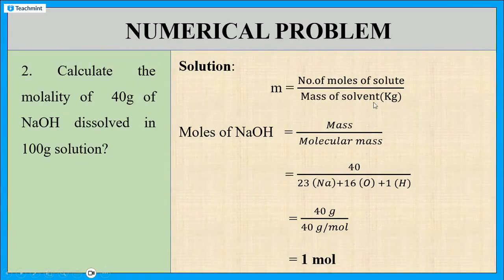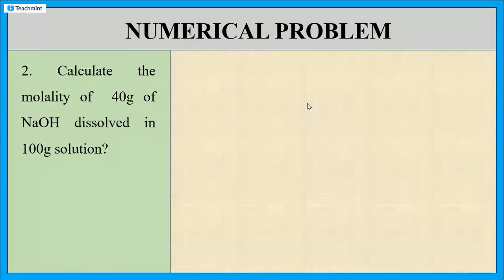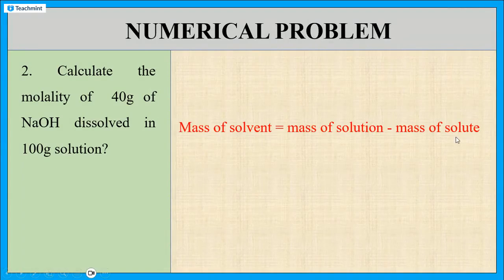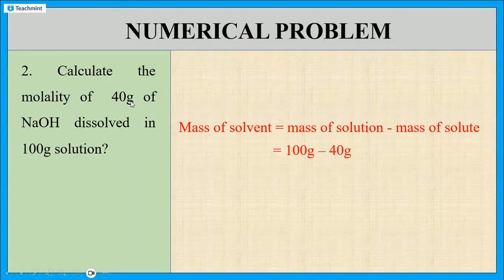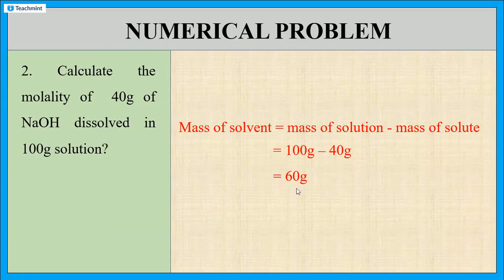Now we need the mass of the solvent, but only the mass of the solution is given. We get the mass of the solvent by subtracting the mass of the solute from the mass of the solution: mass of solvent equals mass of solution minus mass of solute, which is 100 grams minus 40 grams, giving 60 grams. Converting to kg, we divide by 1000, giving 0.060 kg.